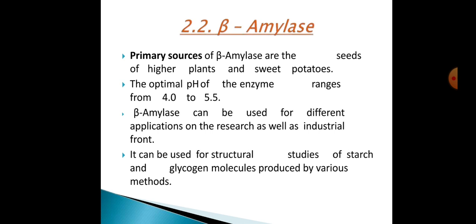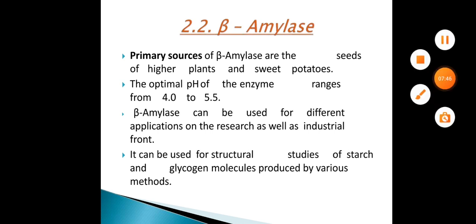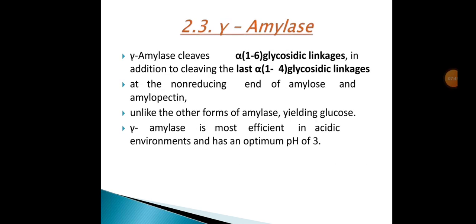Beta-amylase can be used for structural studies of starch and glycogen molecules. Gamma-amylase cleaves alpha-1,6 glycosidic linkages in addition to cleaving alpha-1,4 glycosidic linkages at the non-reducing end of amylose and amylopectin. Unlike other forms of amylase, gamma-amylase is most efficient in acidic environments with an optimum pH of 3, and its yielding product is glucose.